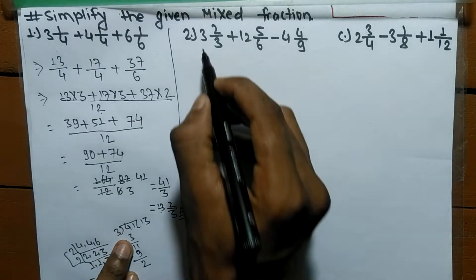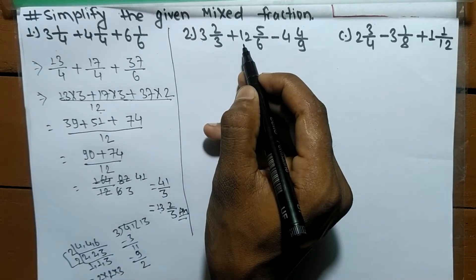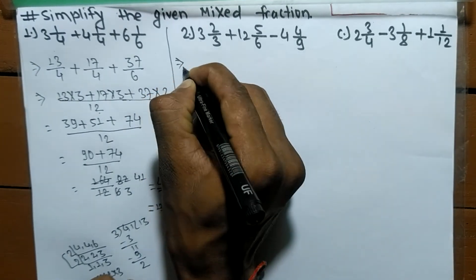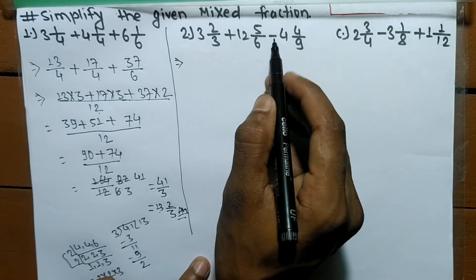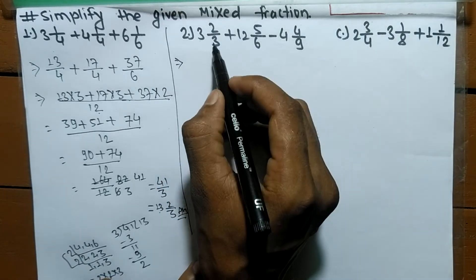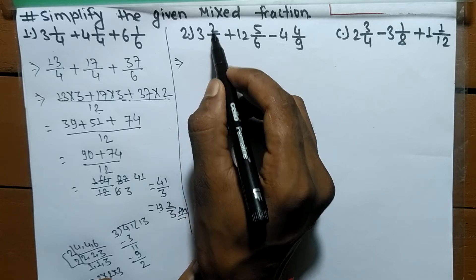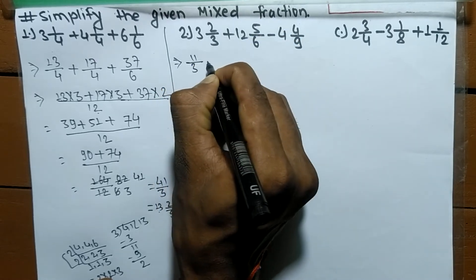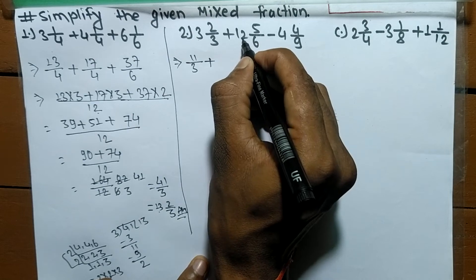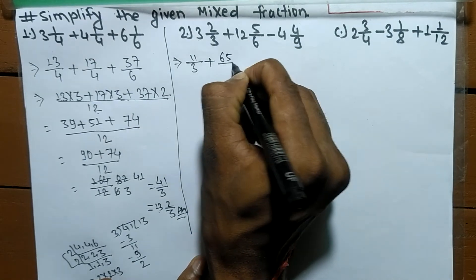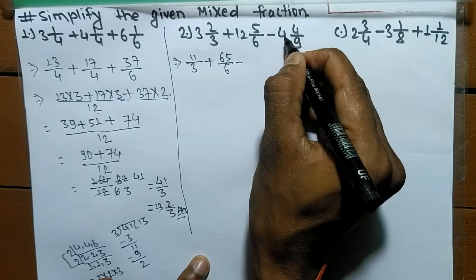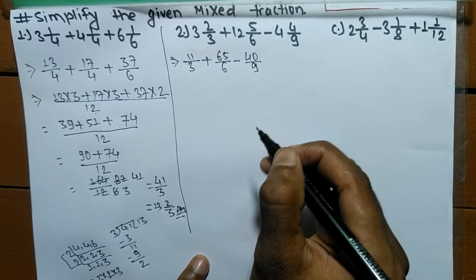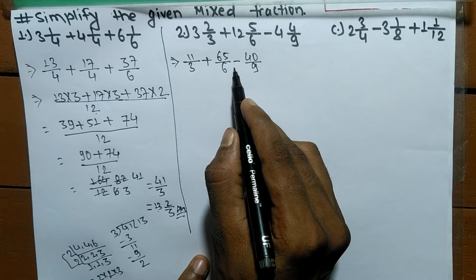The second problem is 3 whole 2 by 3 plus 12 whole 5 by 6 minus 4 whole 4 by 9. As in the first problem, we first convert them into improper fractions. So 3 times 3 means 9 plus 2 means it is 11 by 3, plus 5 times 12 means 60 plus 5 means it is 65 by 6, minus 4 times 9 means 36 plus 4 means it is 40 by 9.